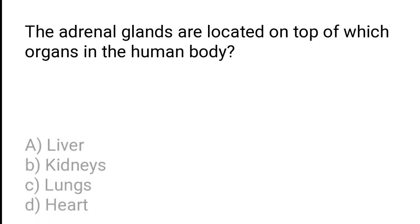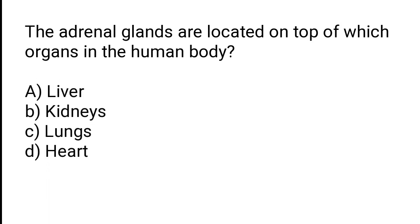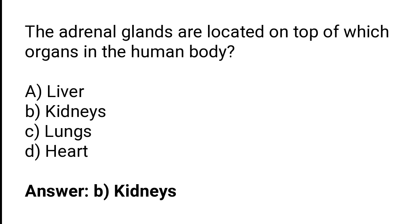The adrenal glands are located on top of which organs in the human body? Liver, kidneys, lungs, heart. The correct answer is option B: the adrenal glands are located on top of the kidneys.